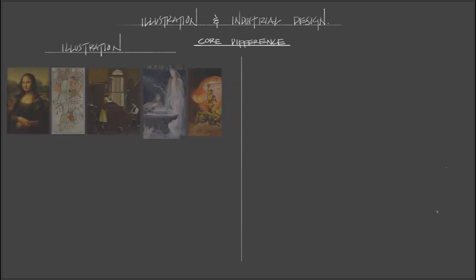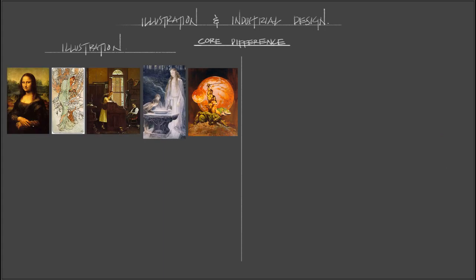Let's start with the illustration side. Here are some of my favorite illustrators — some very well-known, famous ones. Here's the Mona Lisa by Leonardo da Vinci, here's Mucha who does these beautiful Art Deco type illustrations, Norman Rockwell — a very classic American painter, he's like an American icon. Here's Alan Lee, who illustrated a lot of Lord of the Rings and also worked on the Lord of the Rings films. And of course Frank Frazetta, an extremely famous illustrator.